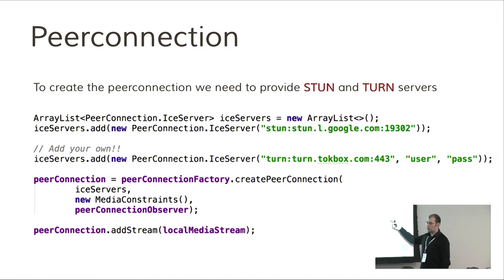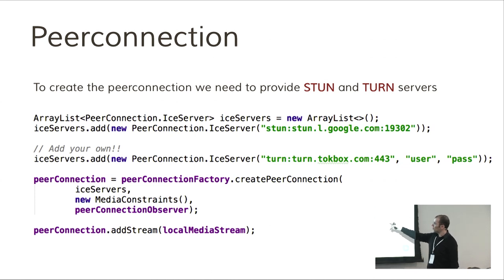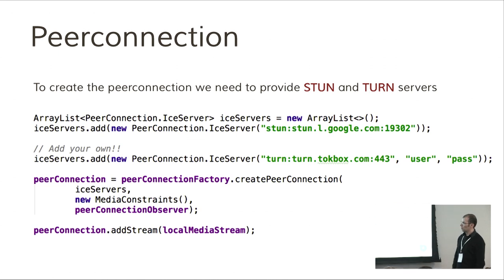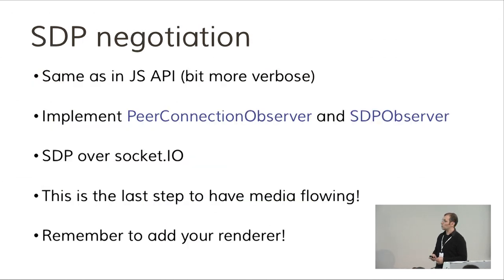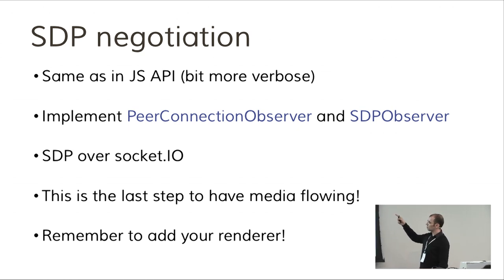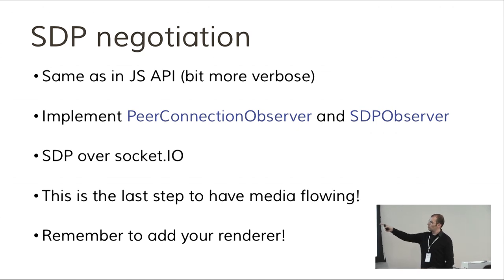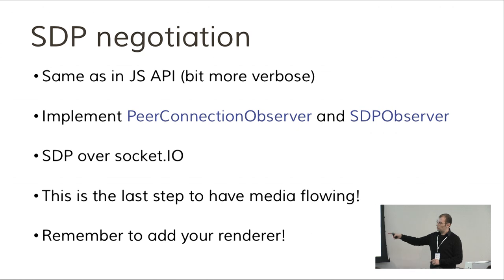This is where third-party providers like Tokbox are important — they provide all these things so you don't have to deploy your own. We create the peer connection using the peer connection factory we created before and add our local stream to the peer connection. That way, when the peer connection is connected to the other peer, they will see our video. Then the SDP negotiation begins — it's the same as in JavaScript but more verbose in Java. You implement the peer connection observer and SDP observer to get notifications from the connection.